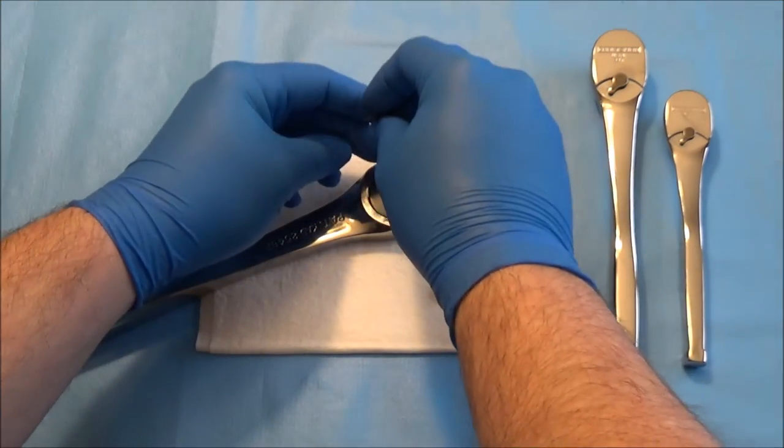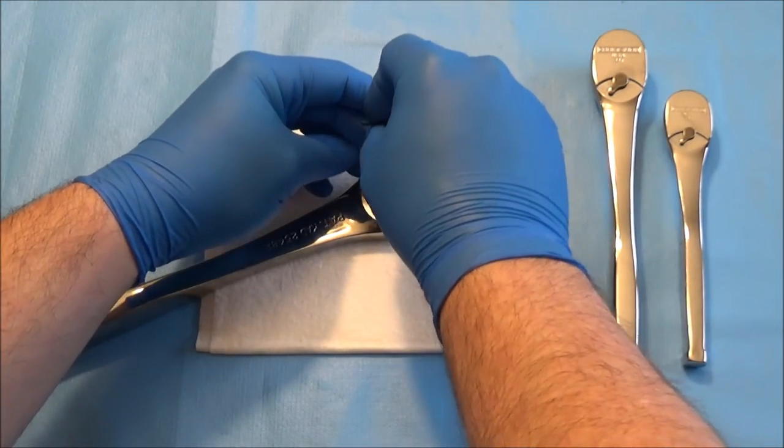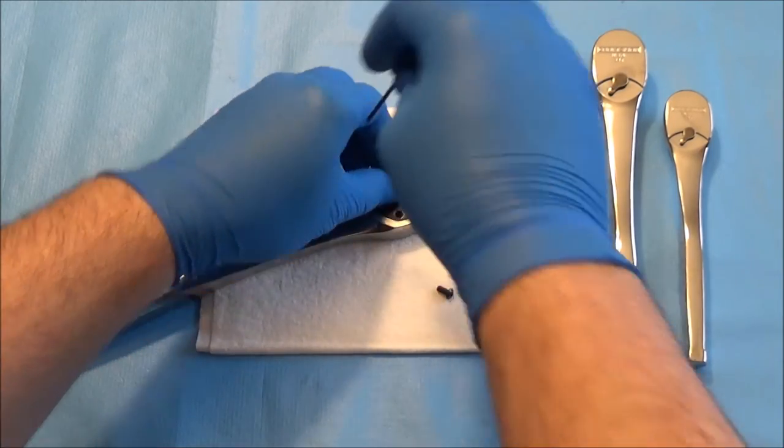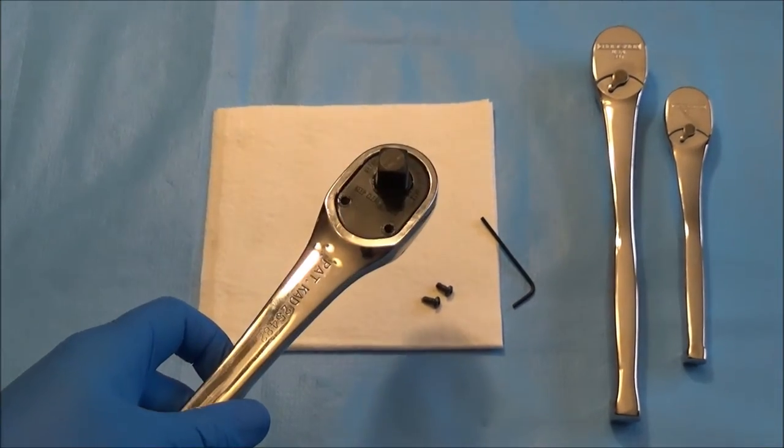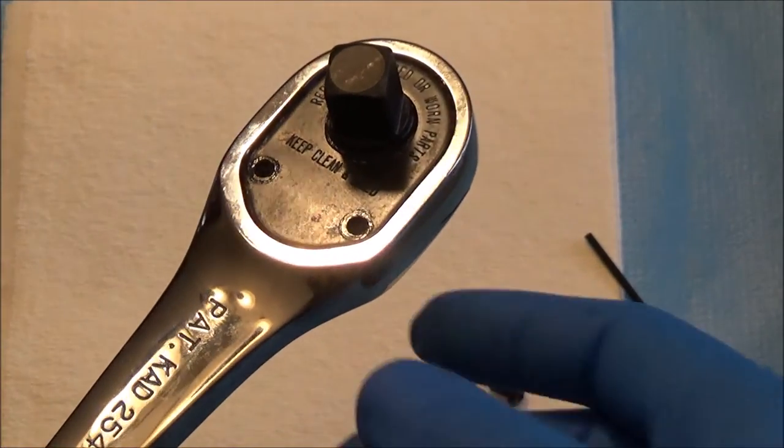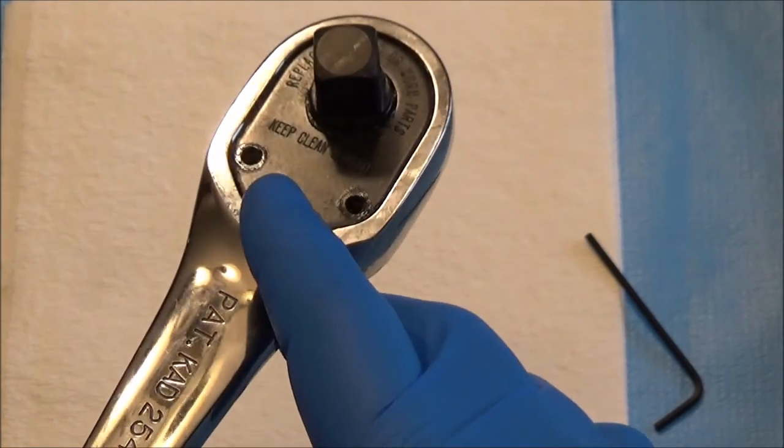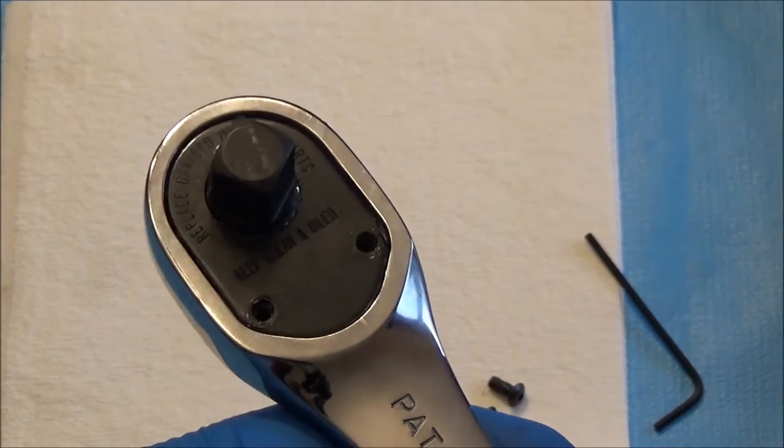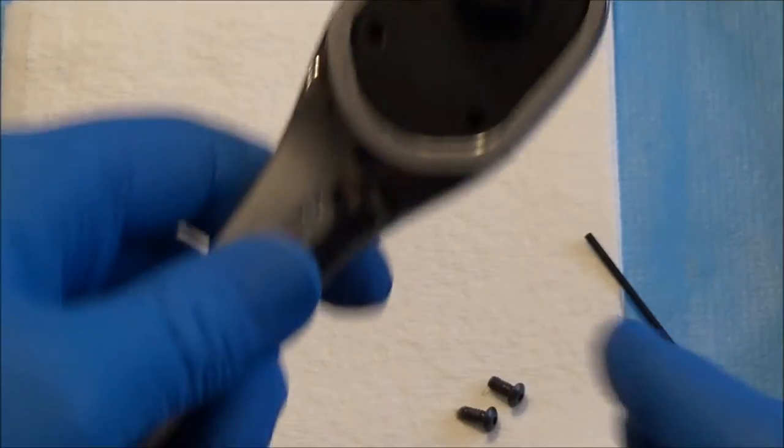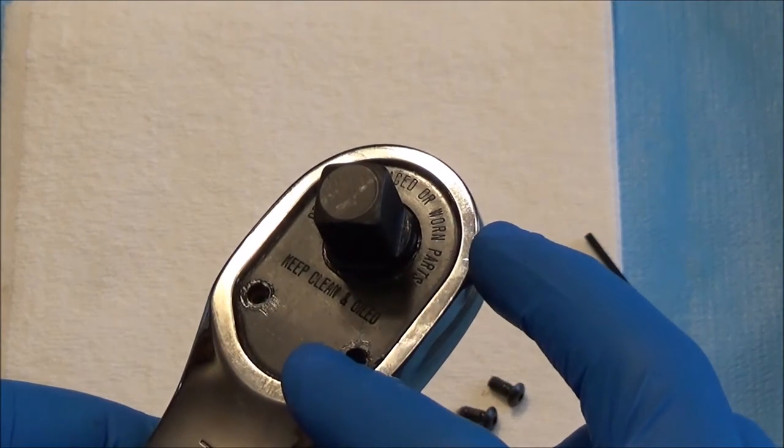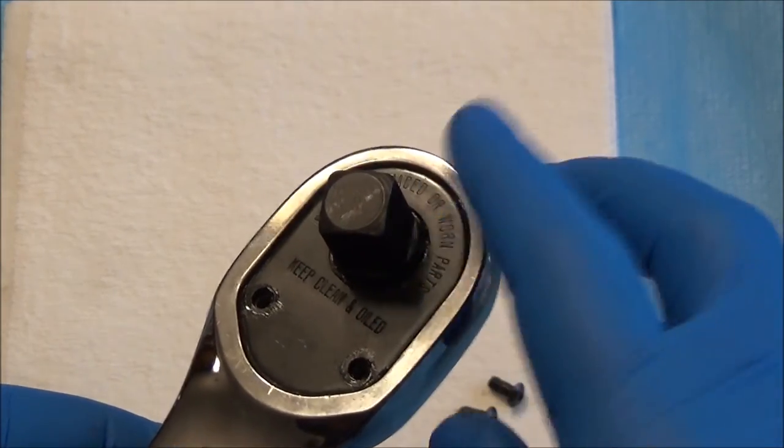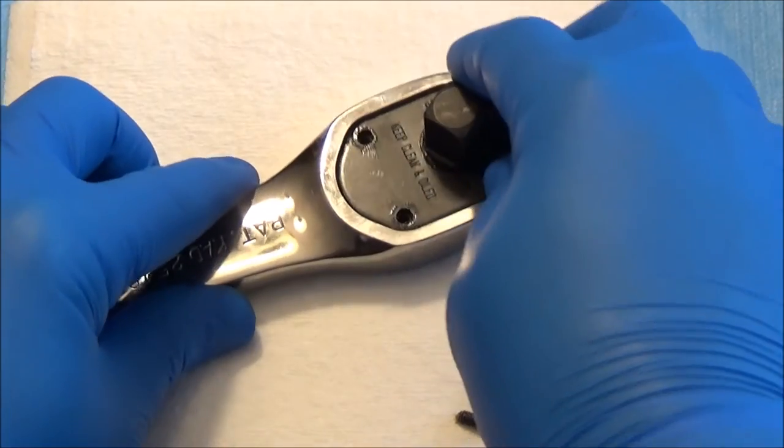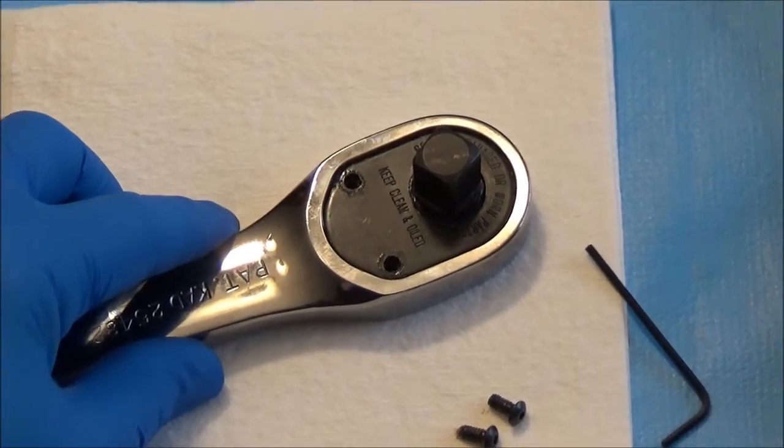Let's zoom in and take a look at what's readable. It says keep clean and oiled, and also on the top part of the head it says replace damaged or worn parts. Okay, here we go.